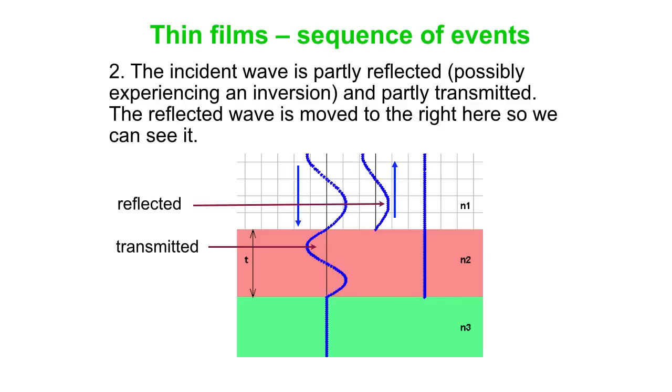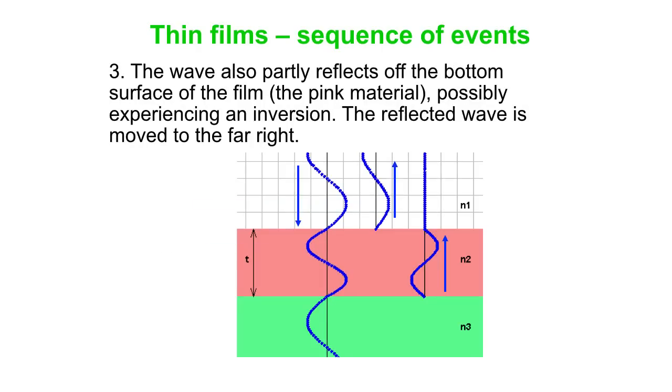There's another interface between the pink and the green region, between medium 2 and medium 3. We played the film forward another period of the wave. Part of the wave gets transmitted into the bottom medium. Part of the wave comes back into the pink film. That comes back along the same line the wave came in at, but we've shifted that wave even more to the right so you can see it. Here we have the transmitted piece. Here's the reflected piece. Those are going the same way, and that's going to tell you that N3 is less than N2. We don't get an inversion, a flip, for that interface.